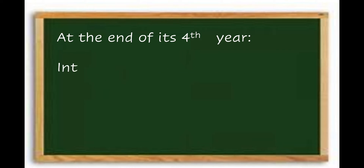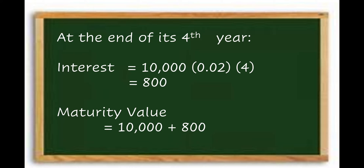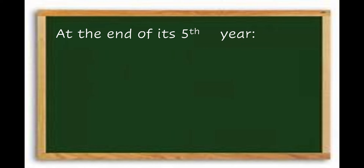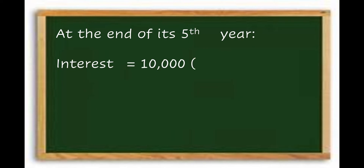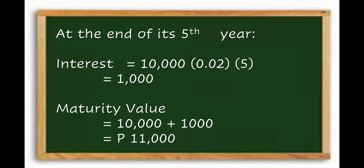At the end of the fourth year, the interest is ₱10,000 × 0.02 × 4 = ₱800. The maturity value is ₱10,000 + ₱800 = ₱10,800. At the end of the fifth year, the interest is ₱10,000 × 0.02 × 5 = ₱1,000. The maturity value is ₱10,000 + ₱1,000 = ₱11,000.